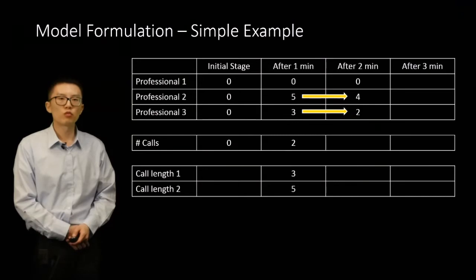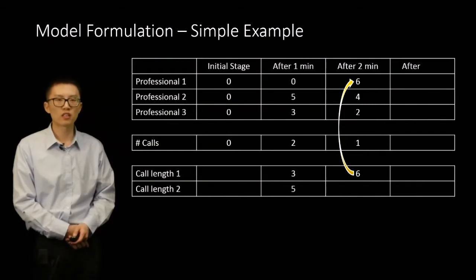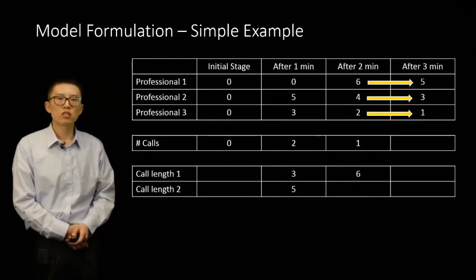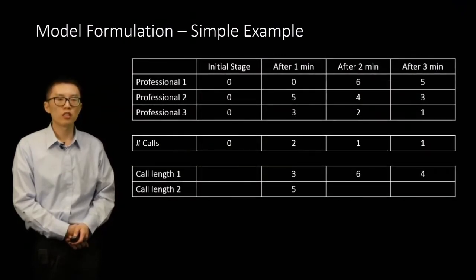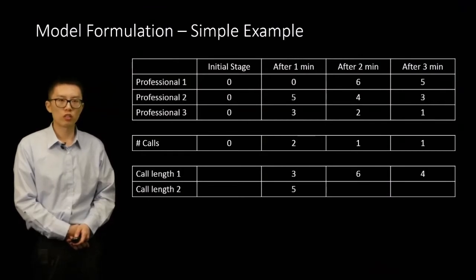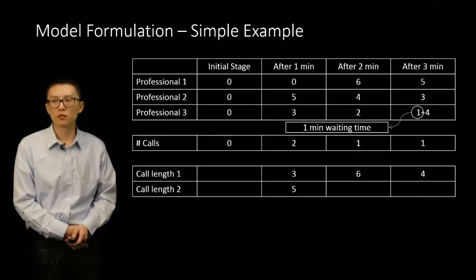After one minute, five becomes four and three becomes two — four minutes left for the second call professional to be free, and two minutes left for the third. We receive another call with an expected length of six minutes: the one coming from the Poisson distribution, and six from the log-normal distribution. This call is picked up by the first call professional since he is free. After another minute, six becomes five, four becomes three, and two becomes one. All call professionals are now occupied. We receive another call with an expected length of four minutes. The next-available call professional will take this call — in this case, call professional three will take it in one minute, so this becomes a one-minute waiting time.